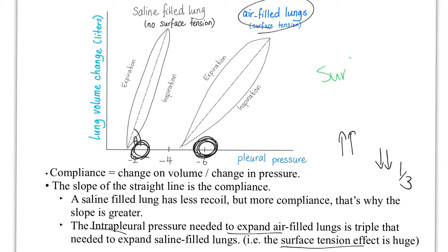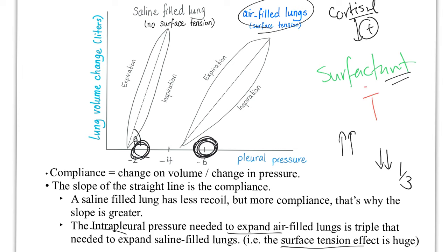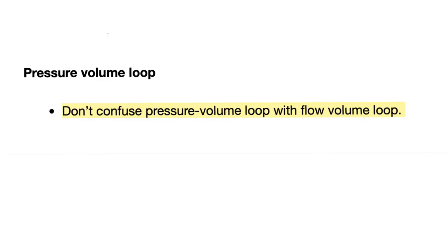That's why you are lucky if your lungs have surfactant. In the sad case of immature babies born without surfactant, their lungs are at risk of recoiling — that's why we give them something to boost surfactant, such as cortisol, thyroxin, and prolactin. Insulin, on the other hand, inhibits surfactant production. That's why there is a greater risk of neonatal respiratory distress syndrome if the mother is diabetic. Please don't confuse this pressure-volume loop with flow-volume loops.